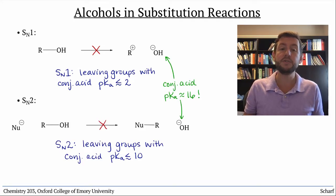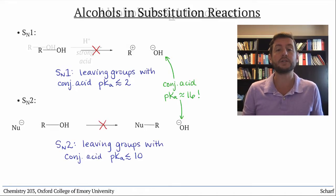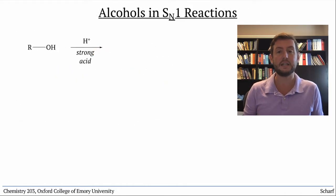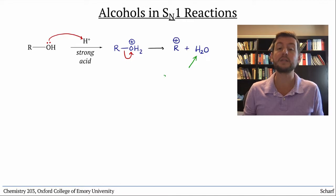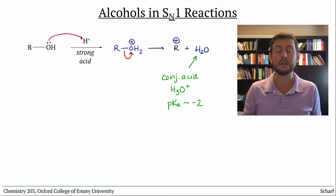But alcohols do sometimes undergo SN1 reactions under strongly acidic conditions. Under these conditions, the OH group can be protonated, improving its leaving group ability. Now the leaving group is water, whose conjugate acid H3O+ has a pKa of about -2, plenty good enough to leave on its own, provided that the carbocation it's departing from is stable enough.